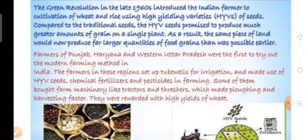Due to increased production yields, India stopped importing food grains from other countries. This was made possible by implementing modern farming methods — using HYV seeds, insecticides, weedicides, pesticides, and chemical fertilizers. This increase in production was known as the Green Revolution, implemented first on wheat and then on other grains like rice and pulses.